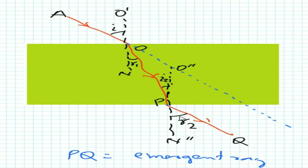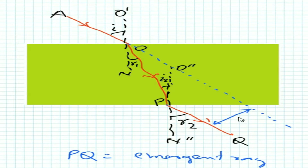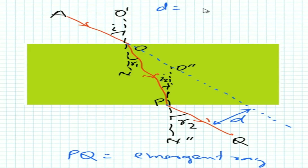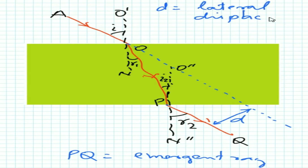One special parameter in this third case is called lateral displacement. The light does not follow its original path — it is laterally displaced by a distance d. This lateral displacement must be noted when this case is asked to be illustrated.